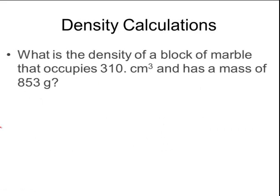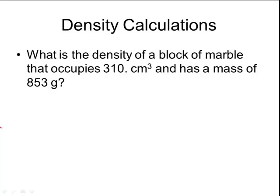Let's try a few density calculations. What is the density of a block of marble that occupies 310 centimeters cubed and has a mass of 853 grams? The first thing that I find very helpful is to take all of the numbers that are in the problem and write them down. Make a list of all the variables that I'm given. So this 310 centimeters cubed says it occupies a space of 310 centimeters cubed, so that is my volume. This other number, 853 grams, is my mass. The second step is to write down the formula that I need in order to calculate this. Since I'm solving for density, I want to write density equals mass divided by volume. And now that I have this list of numbers over here to the side, all I need to do is substitute those numbers into my formula.